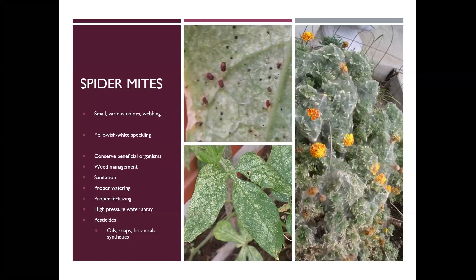You can use things like high pressure water sprays. You could take a pan of soapy water or isopropyl alcohol and tap the plants over top of that to knock these things into it. You could use handheld vacuums to remove these — though vacuums and high pressure water sprays are dependent upon what type of plant you're using them on. If it's a really delicate plant, you might not want to go with that.